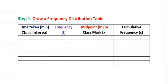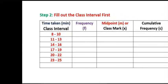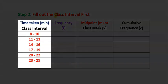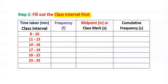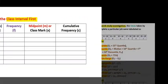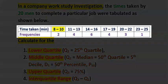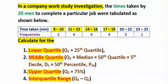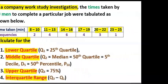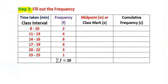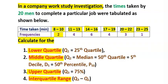To solve this problem, step number one: draw a frequency distribution table like this. Step number two: fill out the class interval, which we have been given in the question. From here, you can see that we have a class interval of three. Step number three: fill out the frequency. From the question, these are the frequencies.